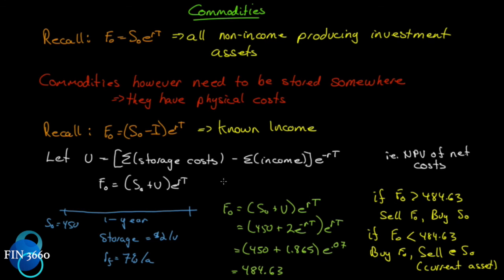If storage costs, on the other hand - we've expressed storage costs here as a flat fee. Storage costs don't necessarily need to be a flat fee. If storage costs are not a flat fee, then our formula over here would change to F₀ = S₀e^((r+u)T). Notice what we've done here: for a known income, it goes inside our brackets, and for a known cost, for a known yield...